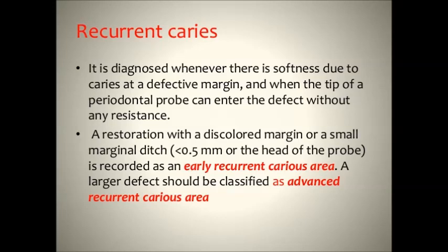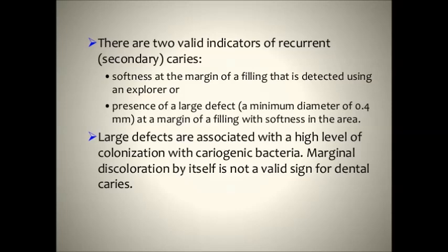Recurrent caries is diagnosed whenever there is softness due to caries at a defective margin and when the tip of the periodontal probe can enter the defect without any resistance. A restoration with a discolored margin or a small marginal ditch is recorded as an early recurrent caries area. A larger defect is classified as an advanced recurrent caries area. There are two valid indicators of recurrent caries: softness at the margin of the filling detected using an explorer, or the presence of a large defect with a minimum diameter of 0.4 mm at the margin of the filling and softness in the area.